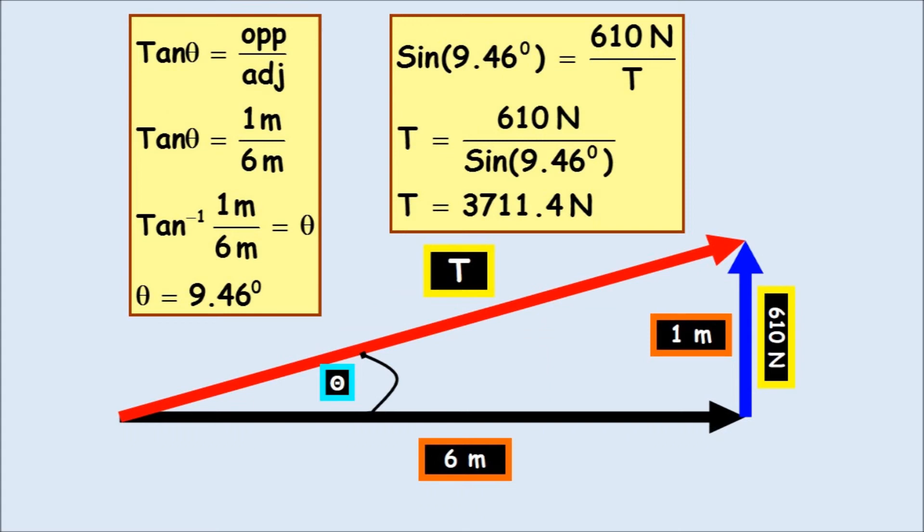610 Newtons is the blue. We're looking for the red. The black is the length of the chord. And we have to find the angle first. So the angle is going to be 9.46. That's going to be opposite over adjacent, which would be 1 over 6. So the arc tangent, 1 over 6, is going to be 9.46. And then plugging that in, we know that the blue line is 610.